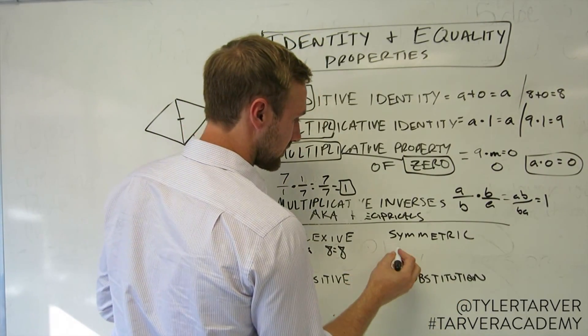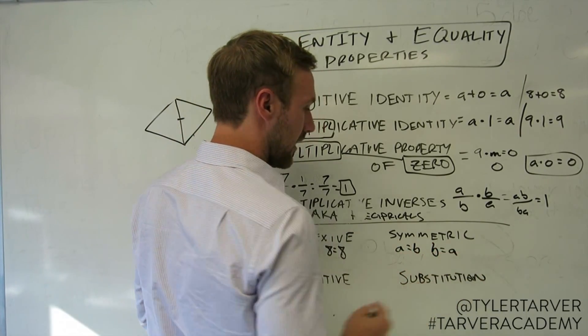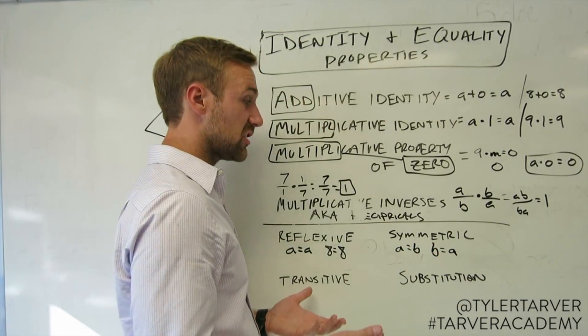That means that if A equals B, I can flip that, and B can equal A. That's all the symmetric property means.